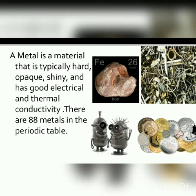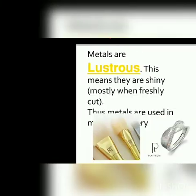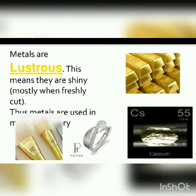There are 88 metals in the periodic table. The first physical property of metals is that they are lustrous — that means they are shiny — mostly when freshly cut.